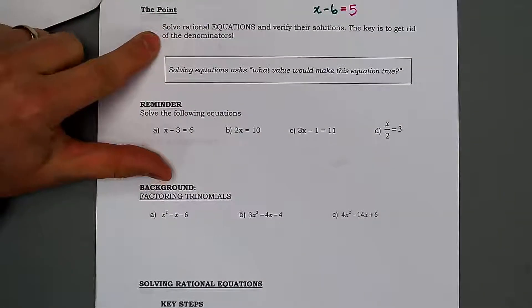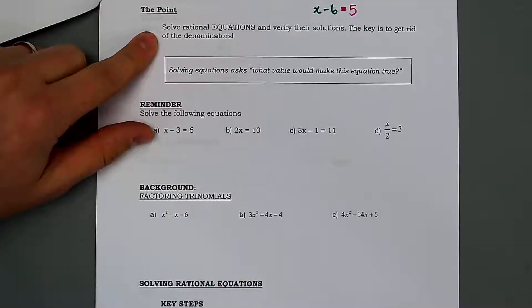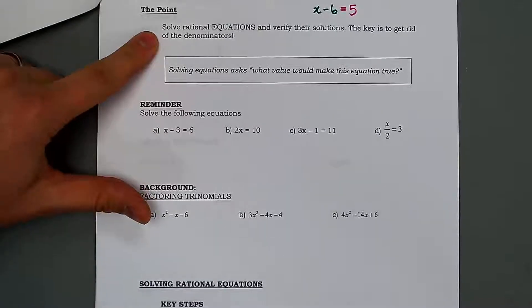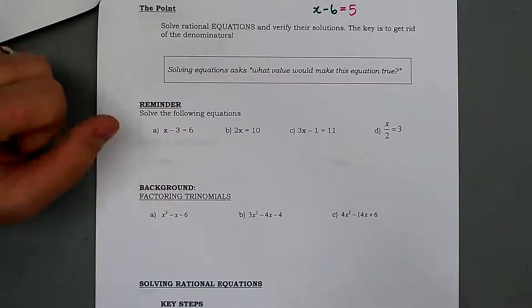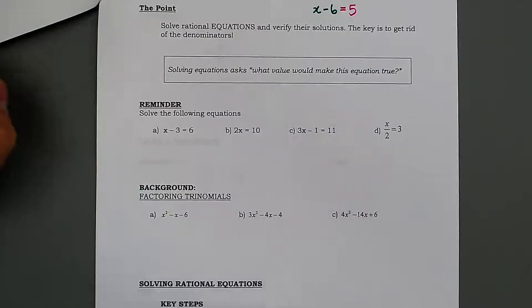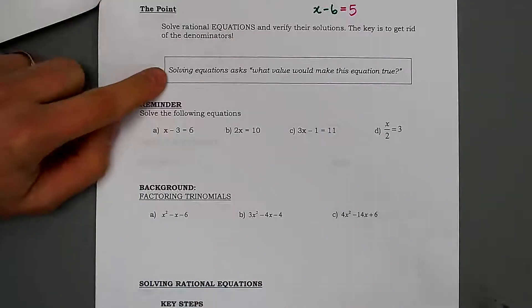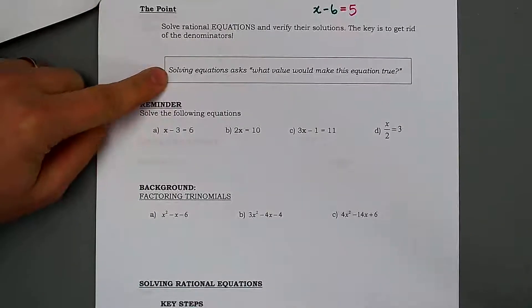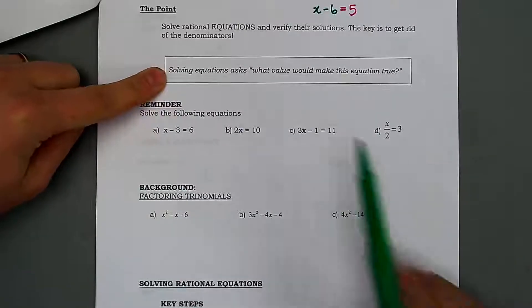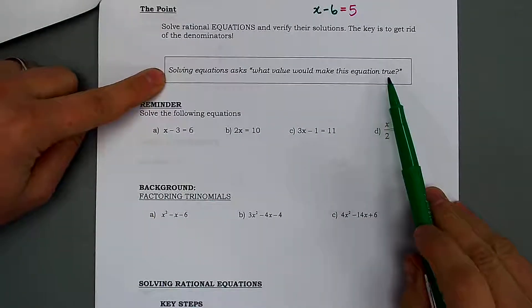Today we are solving rational equations and verifying that our answer is correct. The key is often to get rid of those denominators, so our answers are going to look very different. But in the back of our mind, what we're looking for is asking the question: what value would make this equation true?